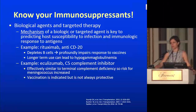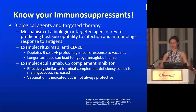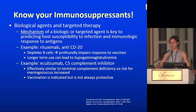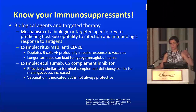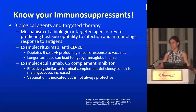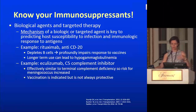Eculizumab is a C5 complement inhibitor approved for atypical hemolytic uremic syndrome and paroxysmal nocturnal hemoglobinuria. It creates a situation where you behave as if you have a congenital terminal complement deficiency — and people with that deficiency are particularly vulnerable to meningococcus. When patients are getting eculizumab, you have to vaccinate them before they start for meningococcus. There are now two different meningococcal vaccines — one for ACWNY and one for type B meningococcus. Even with vaccination, these patients can still get meningococcus; there are definitely reports of people getting it despite being vaccinated.